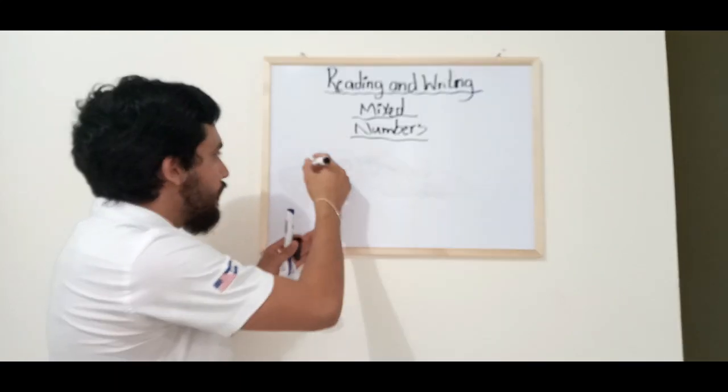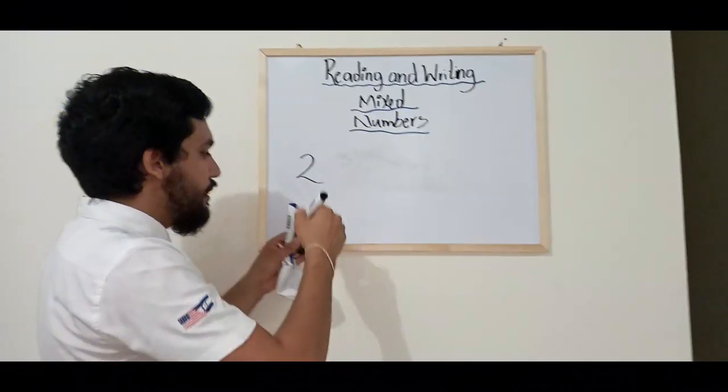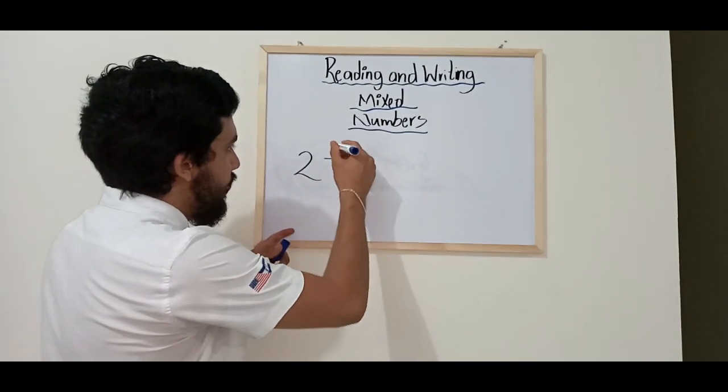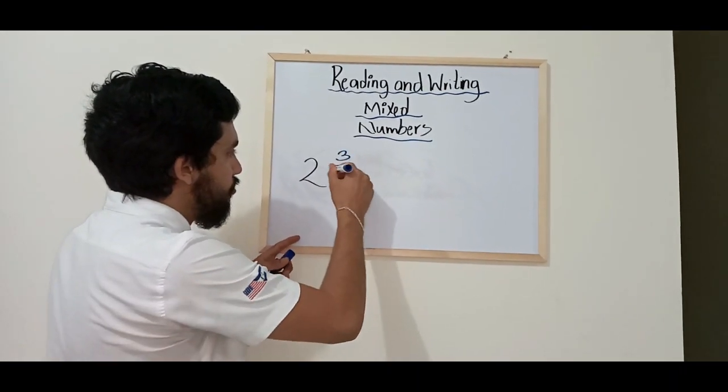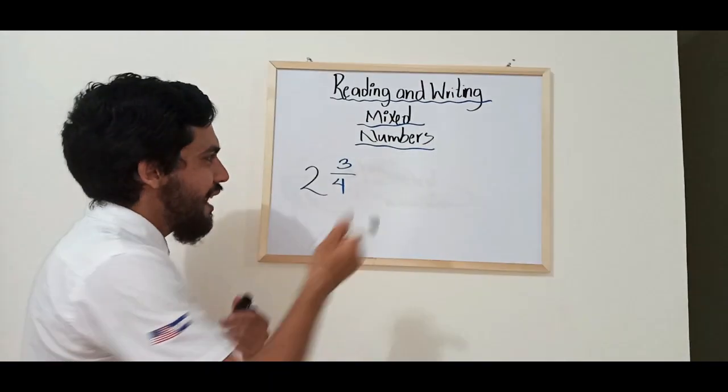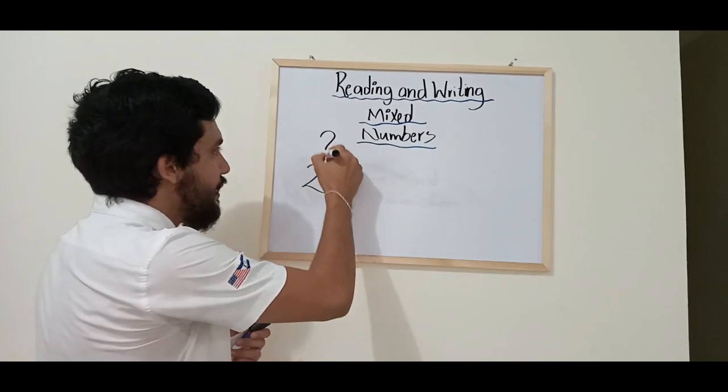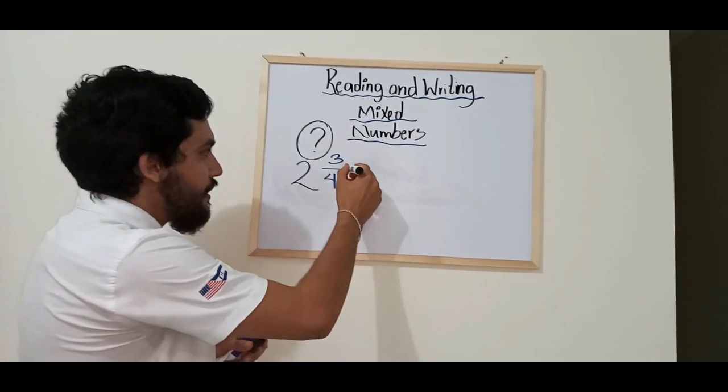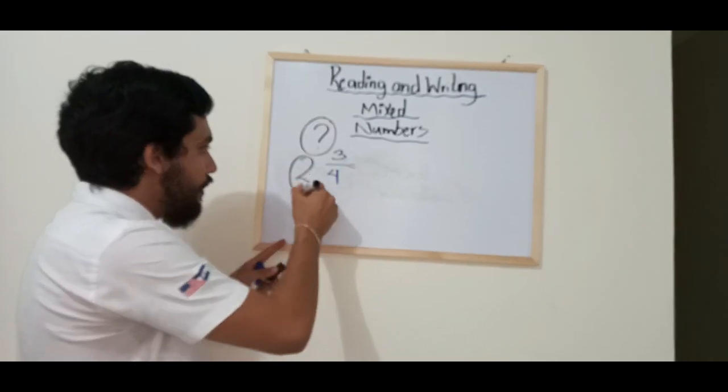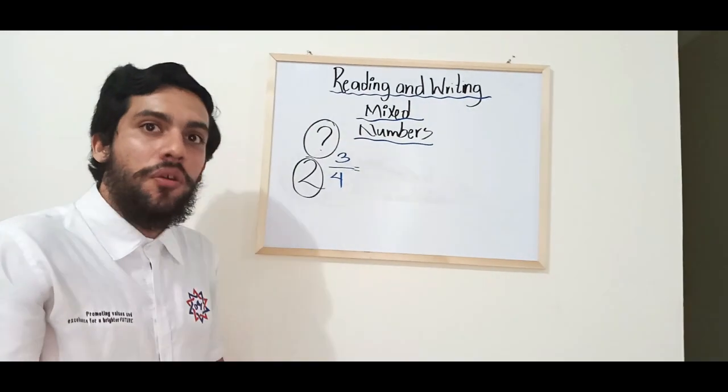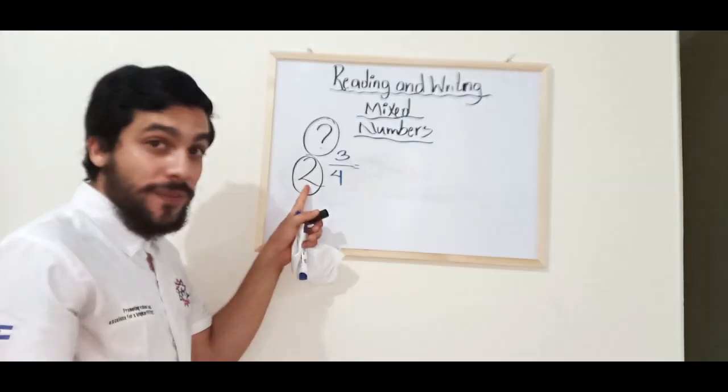Imagine if we have this mixed number. The question is, how do you read this number? To read these numbers is very simple. This number, remember, is called a whole number, so it is read as a whole number. What is the name of this number? This number is 2.